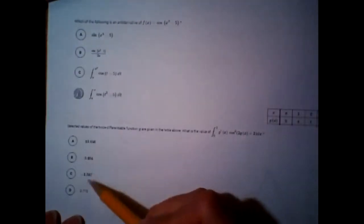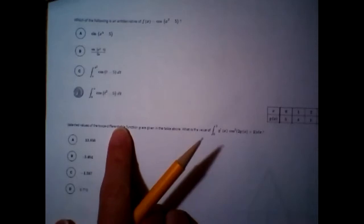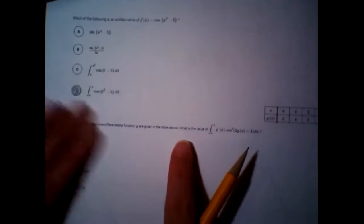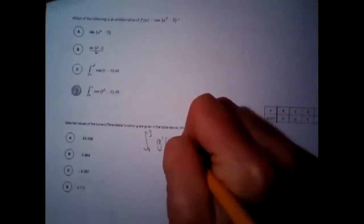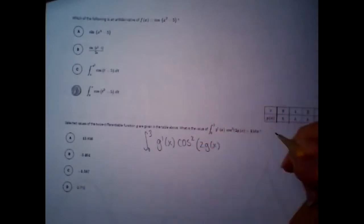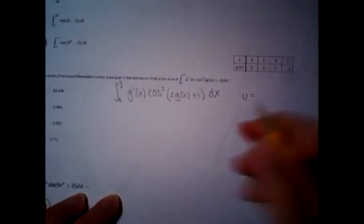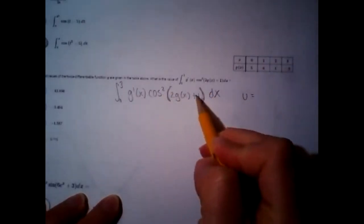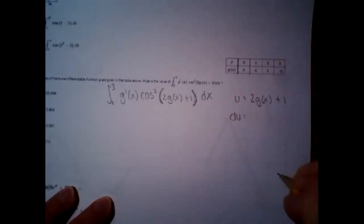Right here, this one has a lot of moving parts to it. Also, we're going to need a calculator, because there are all these crazy decimals. So, you will need a calculator for this one. Alright, values of the twice-differentiable. Can I say twice-differentiable? What they're just saying is this function doesn't have any issues. There's no breaks, holes, gaps. There's no asymptotes, no sharp edges, no vertical tangent lines. Nothing weird happens. What is the value of, and I'm going to write this a little bit bigger so you can see it, integral 0 to 3 g prime of X cosine squared of 2 g of X plus 1 dx.